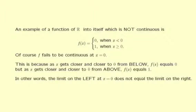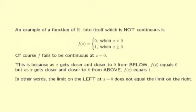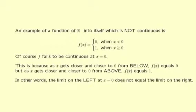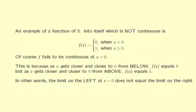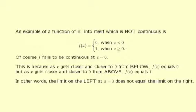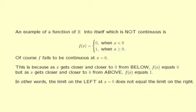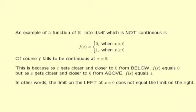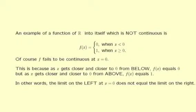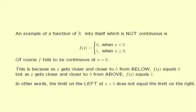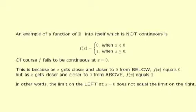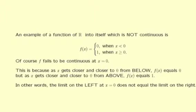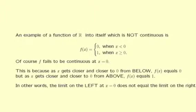An example of a function from ℝ into itself which is not continuous is f(x) = 0 when x is a negative number, and f(x) = 1 when x is a non-negative number. Of course, f fails to be continuous at x = 0. This is because as x gets closer and closer to 0 from below, f(x) = 0, but as x gets closer and closer to 0 from above, f(x) = 1. In other words, the limit on the left at x = 0 does not equal the limit on the right.